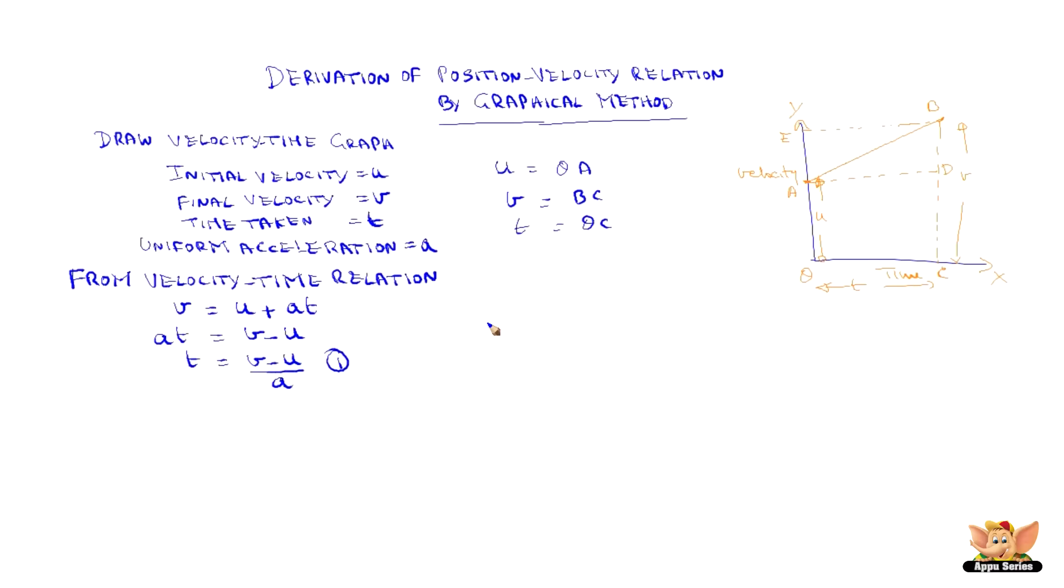Since we need to find out the position, let us say distance travelled by the body in this situation. As we see from the graph, the area covered by the line ab with time axis is a trapezium. So the distance travelled by the body is area of trapezium oabc which can be given as half into sum of the parallel sides which is oa plus bc into height oc.